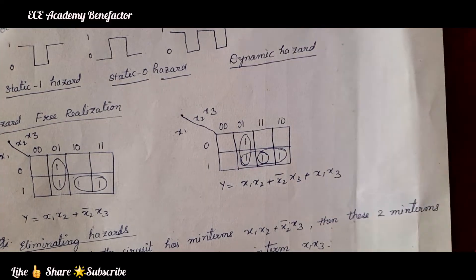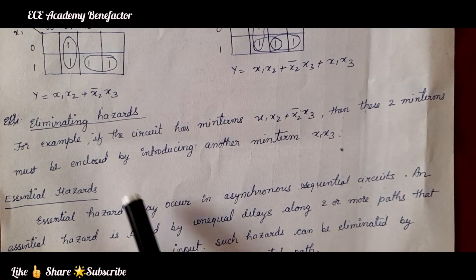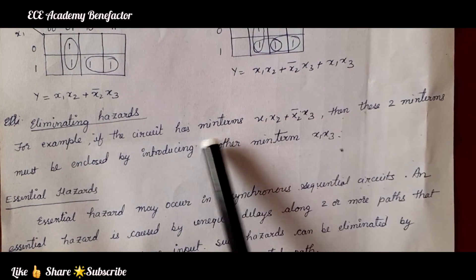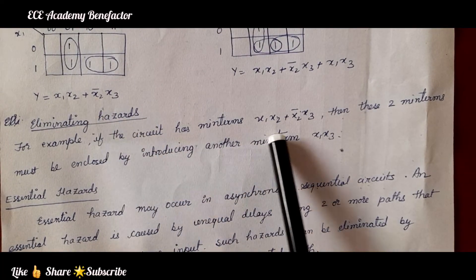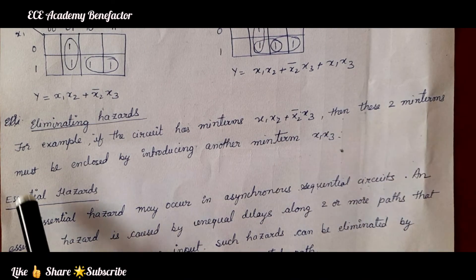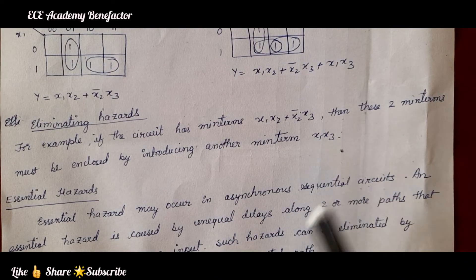So, in this way we can eliminate the hazard. For example, if the circuit has min terms x1 x2 plus x2 bar x3 then these two min terms may be enclosed by introducing another min term x1 x3.